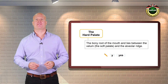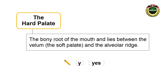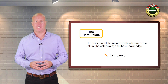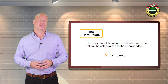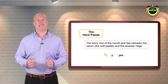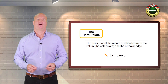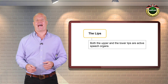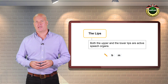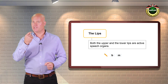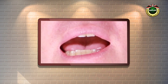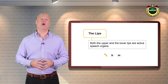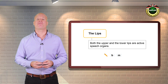The hard palate is the bony roof of the mouth and lies between the velum, or the soft palate, and the alveolar ridge. It is involved in sound production when another organ moves up towards it. Try to say the first sound in yes, y. The lips, both the upper and lower, are active speech organs. Now say b, m. Notice how your lips come into complete contact. Now say f and v. Notice that your lower lip comes into contact with your upper front teeth.